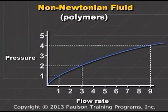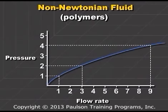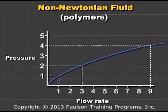If we double the pressure again to 4, the flow rate increases to 9 times the original flow rate. What is happening? The viscosity is being reduced by the flow.